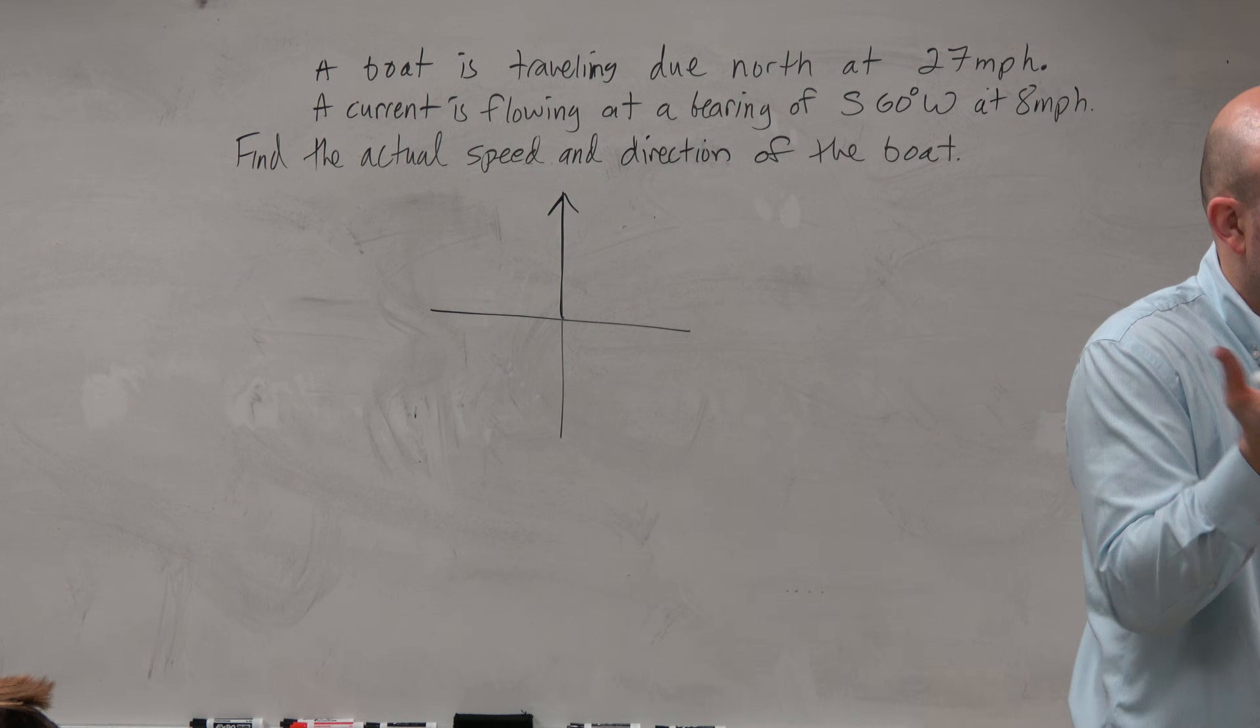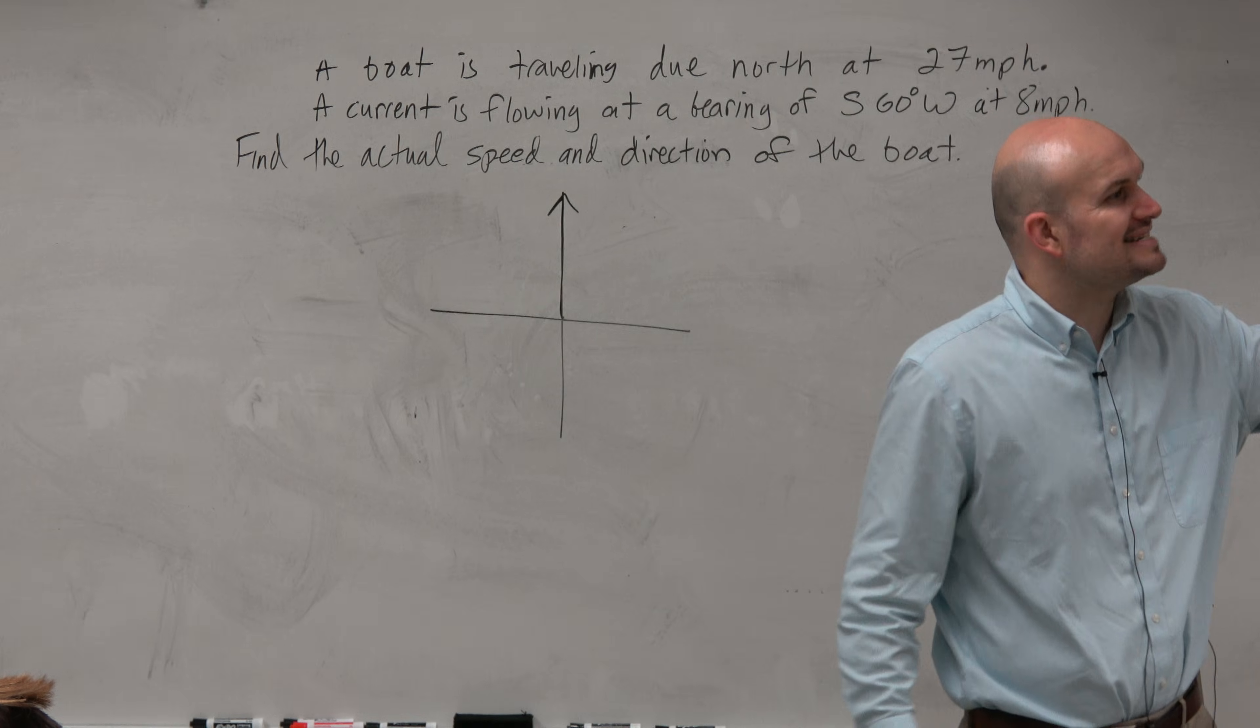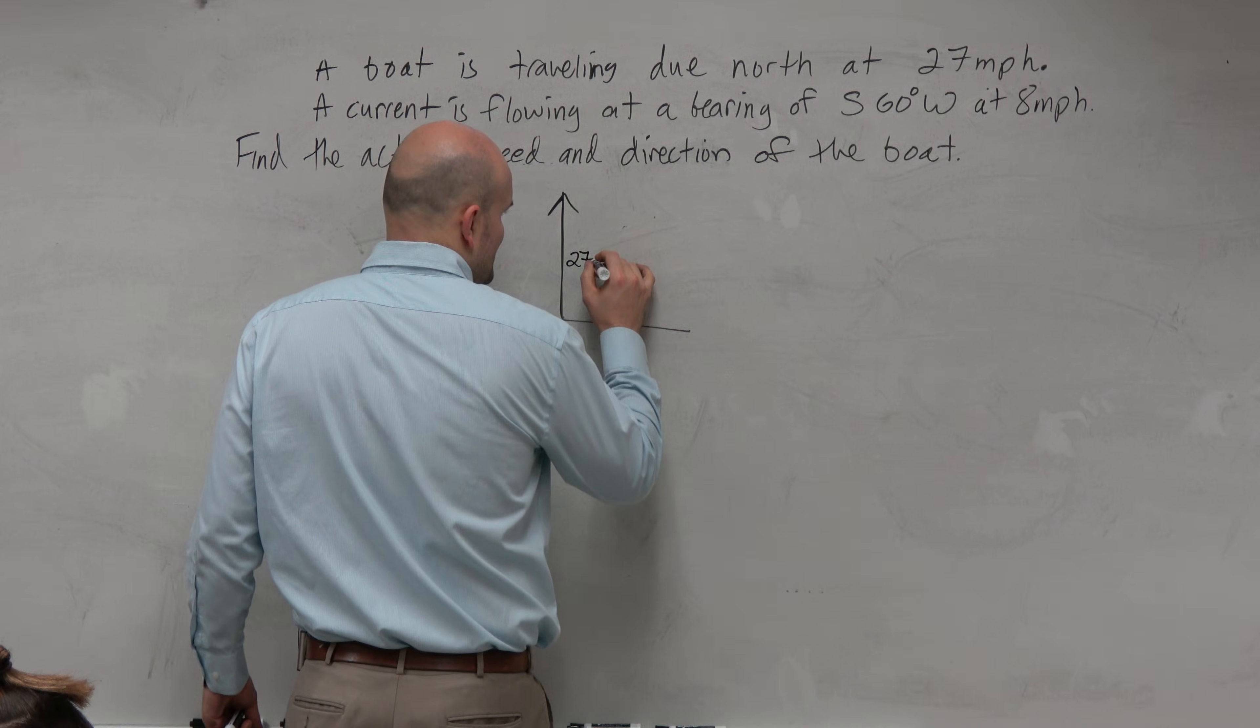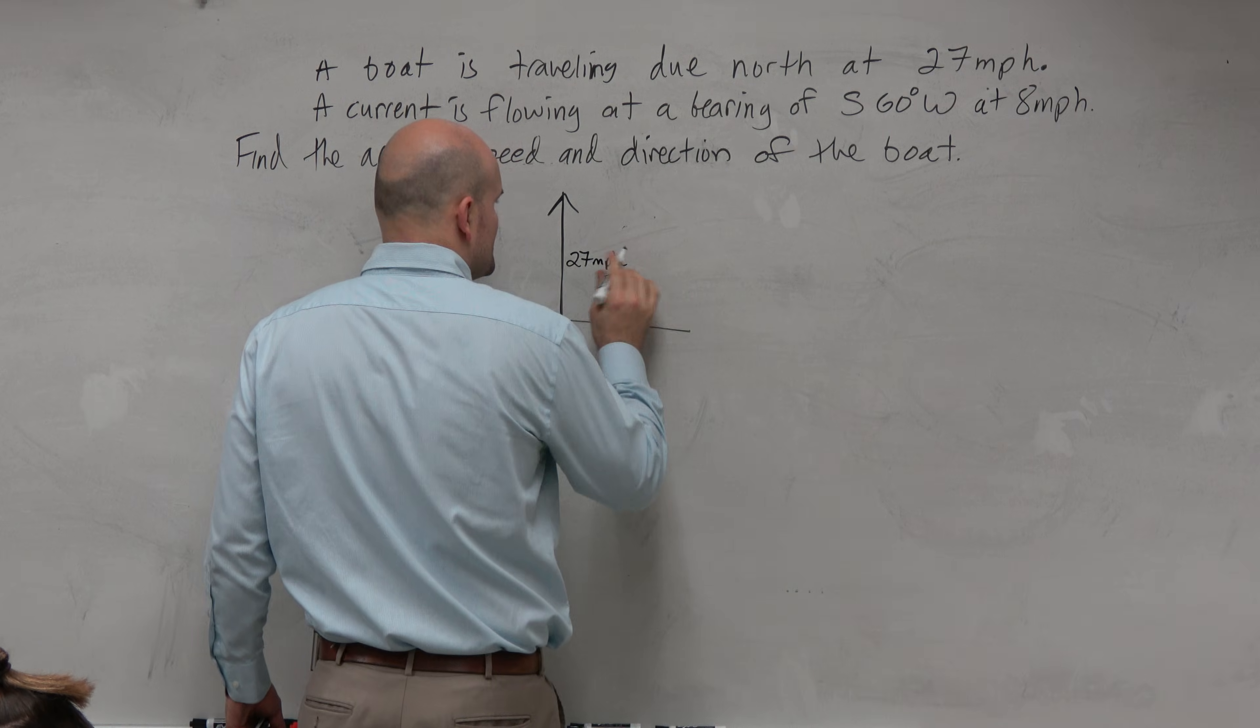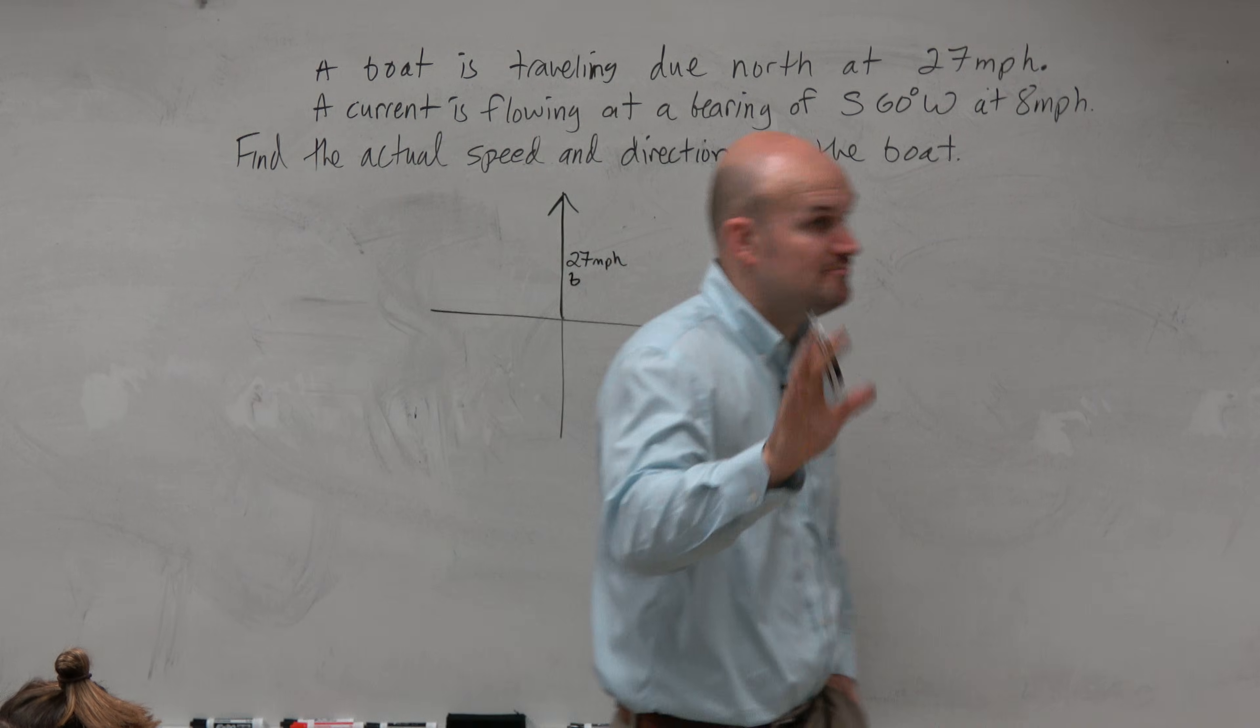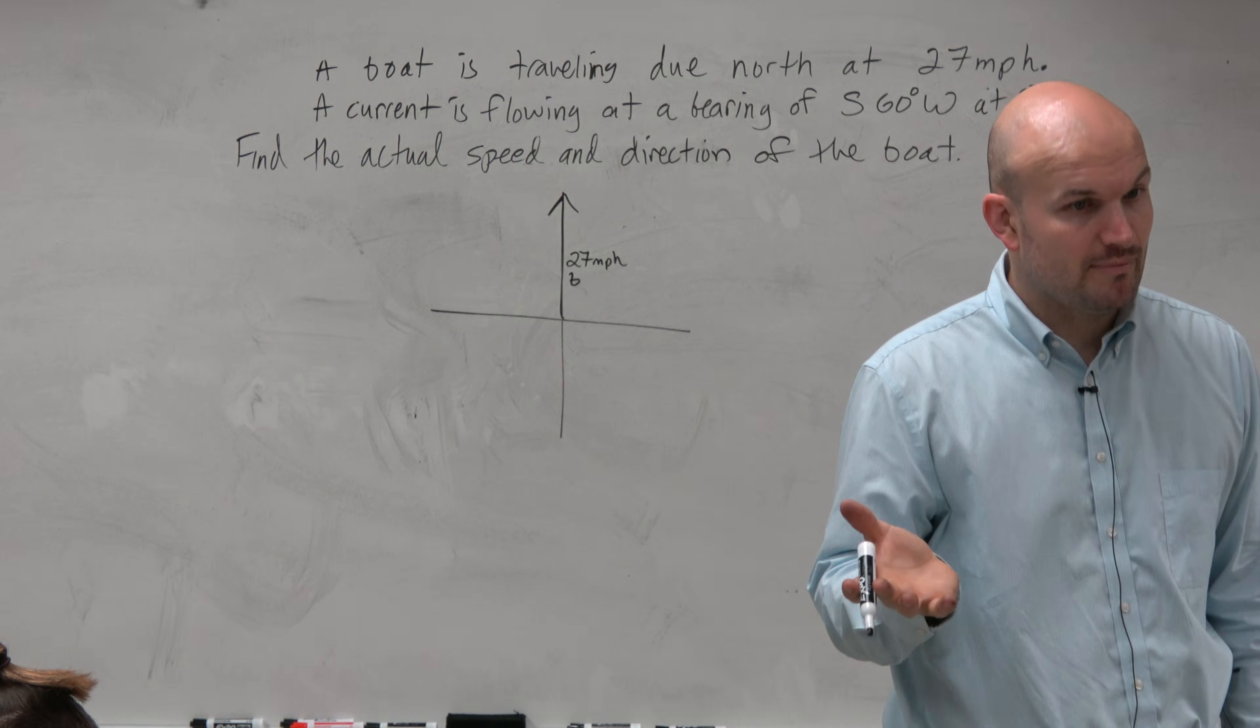So that's going to have to be my magnitude, because we don't have a distance like we did before. So my rate is going to be my magnitude, 27 miles per hour. So I'm going to call that B for boat. So that's going to be the name of my vector, B, for boat, because it's a boat.